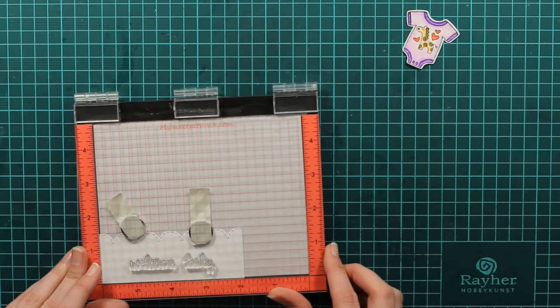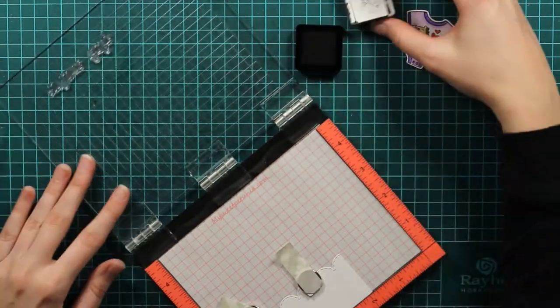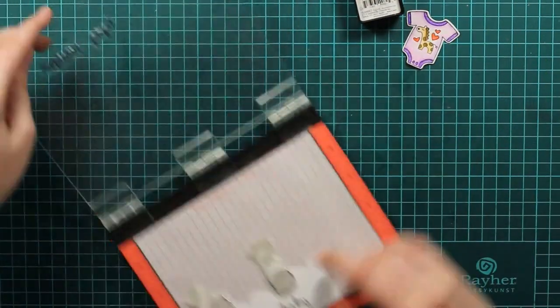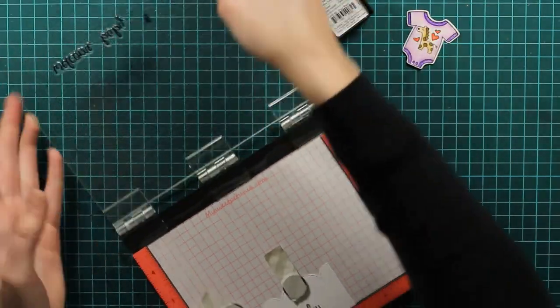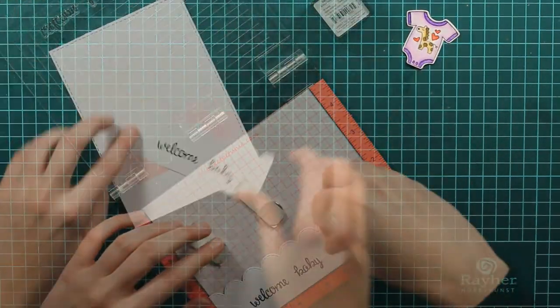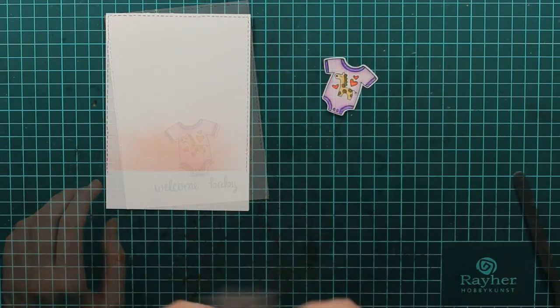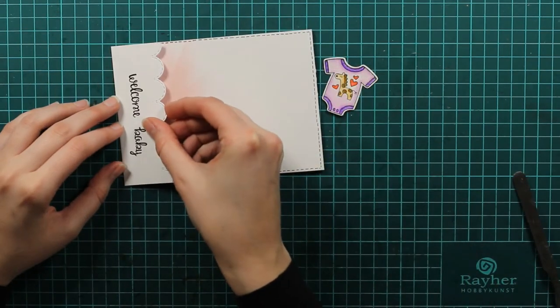Of course we need a sentiment and I will use these that say Welcome Baby. They are actually two stamps but I combined them and it looks perfect. And since they are in the same font it looks great. So now the only thing left is the positioning.